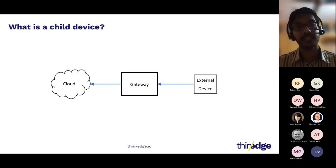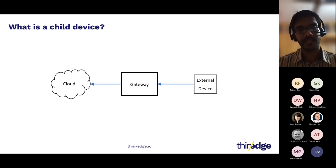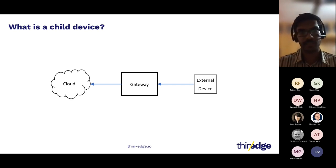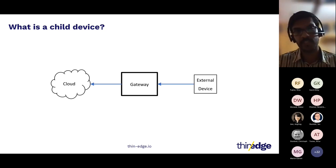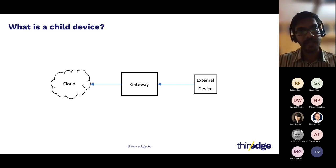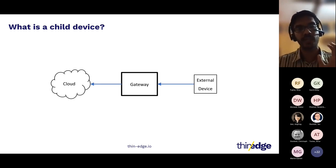Let's talk about what a child device is. In simple terms, a child device can be any device that is connected to a gateway device where Thinage is running on, which I'll refer to as the Thinage device for the rest of the session. These child devices will be generating data like measurements, events, alarms, etc., and they would have their own software and configurations to be managed.